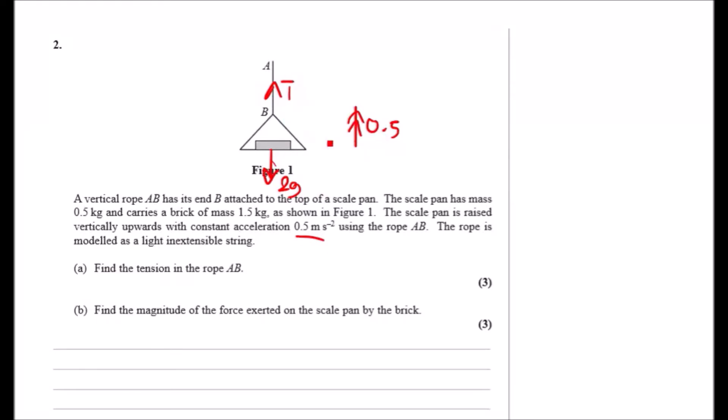Again, just using F equals ma. So the resultant force, looking upwards, would be tension minus 2g. So T minus 2g equals the mass which is 2 times acceleration 0.5. That's it. Now you just make T the subject, so plus 2g across. We're going to have 2 times 0.5 plus 2g, and this should give us 20.6 newtons.